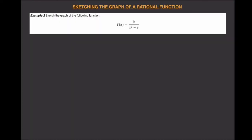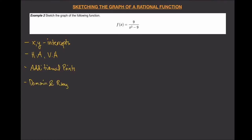Let's sketch the graph of this rational function. We need the following information: the x and y intercepts, the horizontal asymptote, and the vertical asymptote. We might also need some additional points, and afterwards we're going to find the domain and range. Let me put my information here and then solve for them.